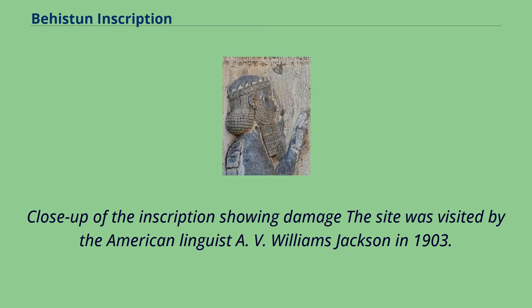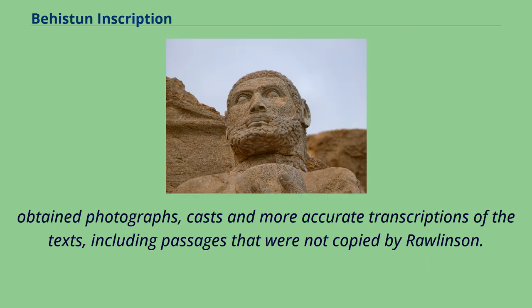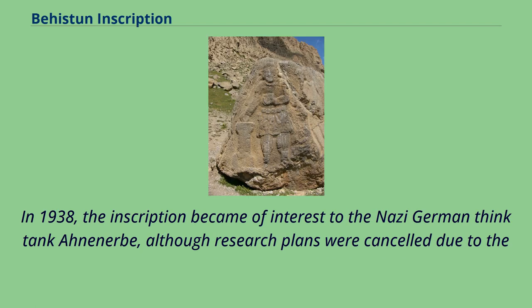The site was visited by American linguist A.V. Williams Jackson in 1903. Later expeditions, in 1904 sponsored by the British Museum and led by Leonard William King and Reginald Campbell Thompson, and in 1948 by George G. Cameron of the University of Michigan, obtained photographs, casts and more accurate transcriptions of the texts, including passages not copied by Rawlinson. It also became apparent that rainwater had dissolved some areas of the limestone in which the text was inscribed, while leaving new deposits of limestone over other areas, covering the text. In 1938, the inscription became of interest to the Nazi-German think tank Ahnenerbe, although research plans were cancelled due to the onset of World War II.